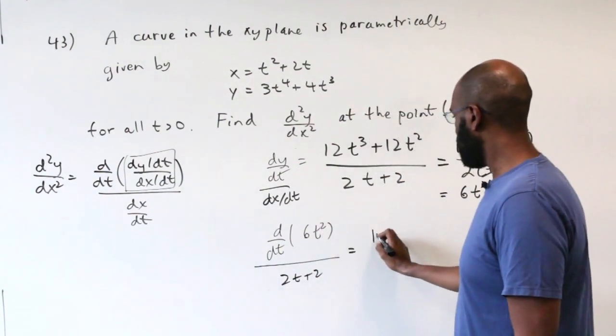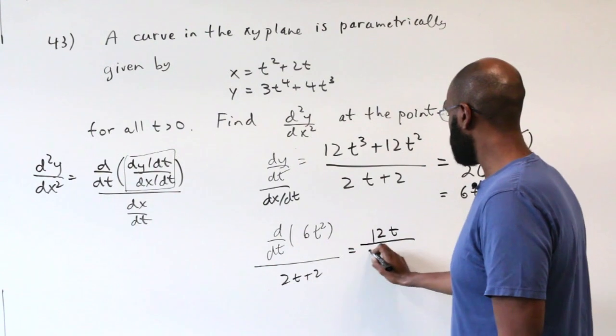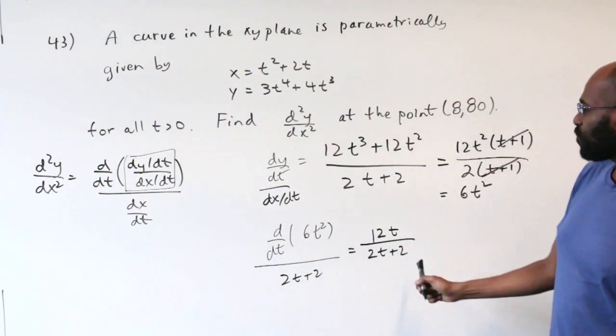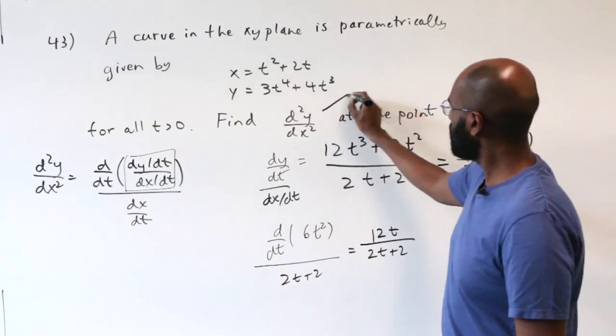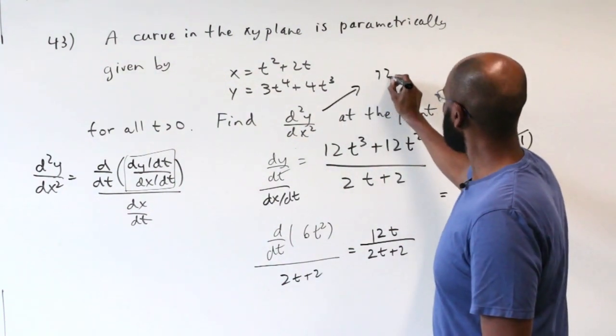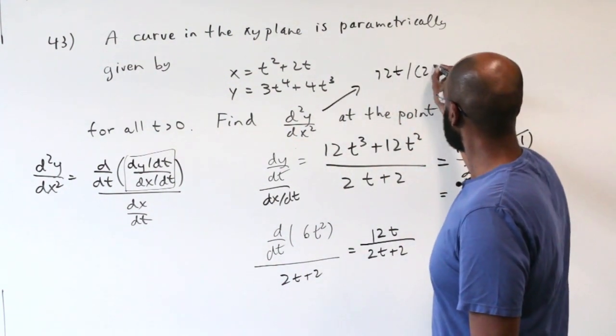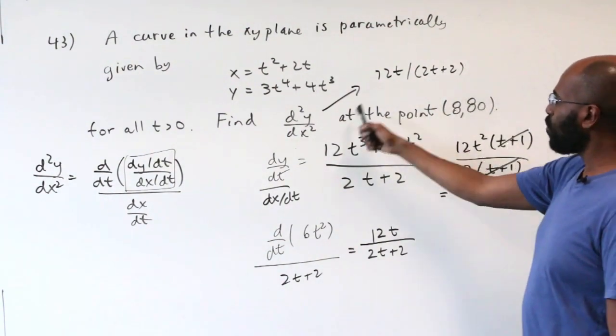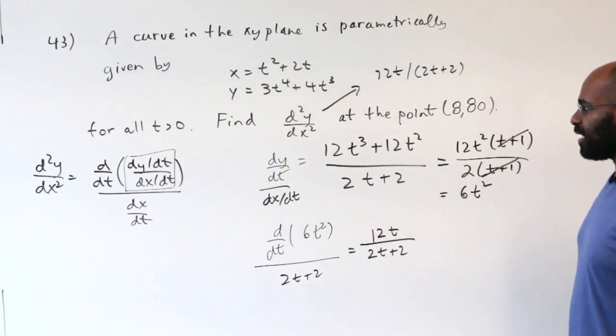And now our question is, what is this quantity at the point (8, 80)? So if you look at things parametrically here, our value x at this point is 8, which means our value of t satisfies that 8 = t² + 2t. So we need to figure out what t is in this case.